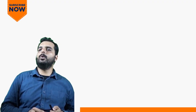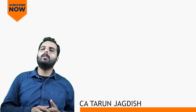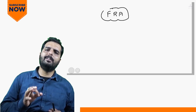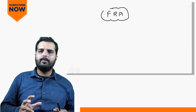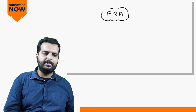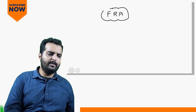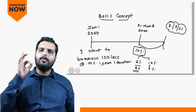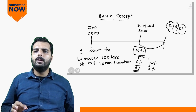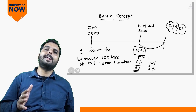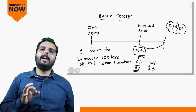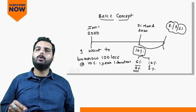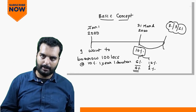In this video we will learn the next concept of interest rate derivatives, which is called FRA or Forward Rate Agreement. This is a very interesting and simple concept. A forward contract is a contract entered today for a future date. Just like that, an FRA is a contract entered today for a future date to borrow a certain sum of money at an agreed future rate.